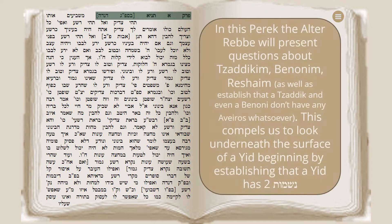In this first Perak — the first chapter of Lokutu Yamarim of Tanya — the Alta Rebbe will present questions about Tzaddikim, Beninim, and Rashaim. The Alta Rebbe will present a number of teachings from Chazal about these three different levels of Yid. As we'll see, there are actually five levels, because there are two levels within Tzaddikim and two levels within Rashaim.